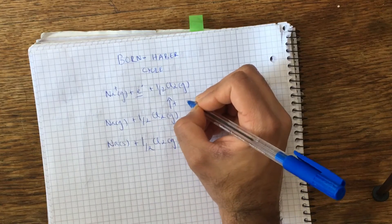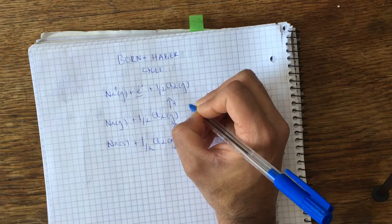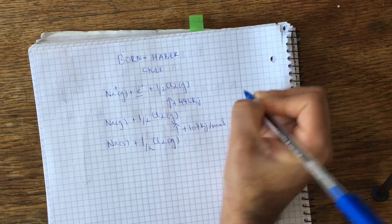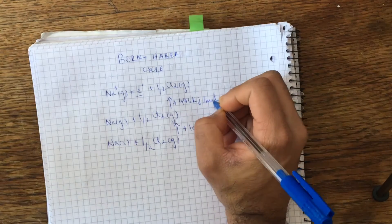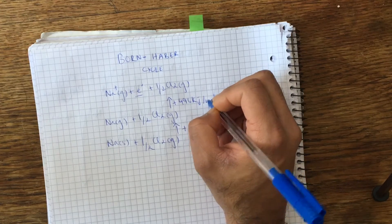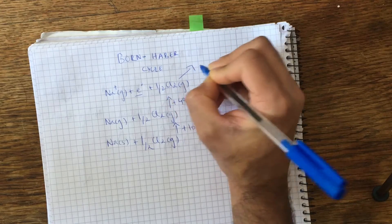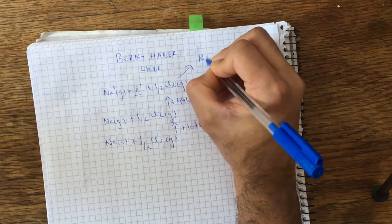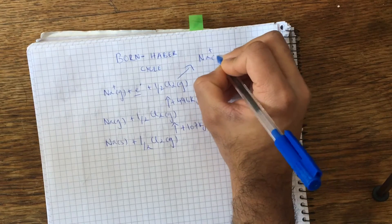And the energy for the first ionization of sodium is plus 496 kilojoules per mole. And now we need to do the same to chlorine. Since I've run out of room here, I'm just going to write it there. We're going to convert chlorine to its monoatomic state.